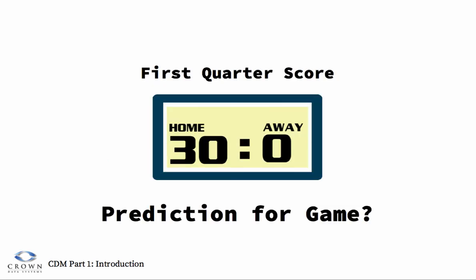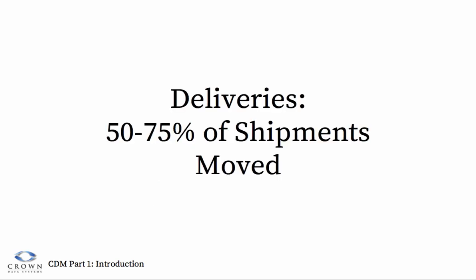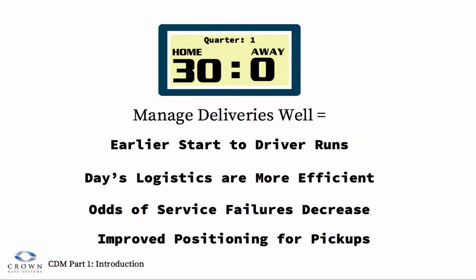Thinking about the benefits of using Crown Dock Manager — imagine one team is up at the end of the first quarter 30-0. What would be your prediction for who would win the game? 50-75% of the shipments in an average air freight trucking company are deliveries. If those trucking companies can manage their deliveries faster and better, it would be easier to start the driver runs for the day, make the day's logistics more efficient, decrease the odds of service failures, and improve positioning for pickups later in the day.